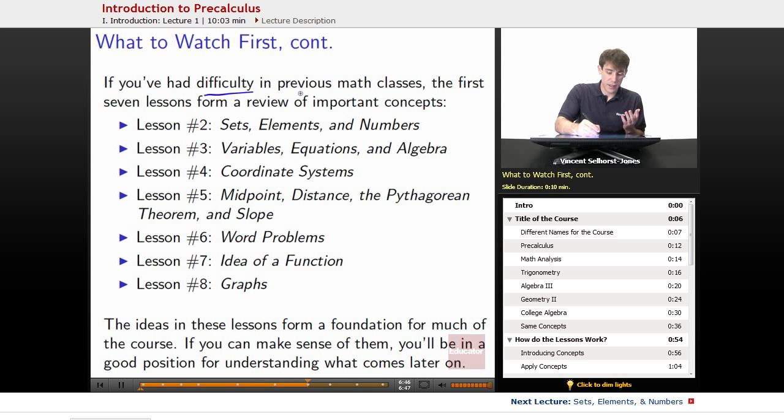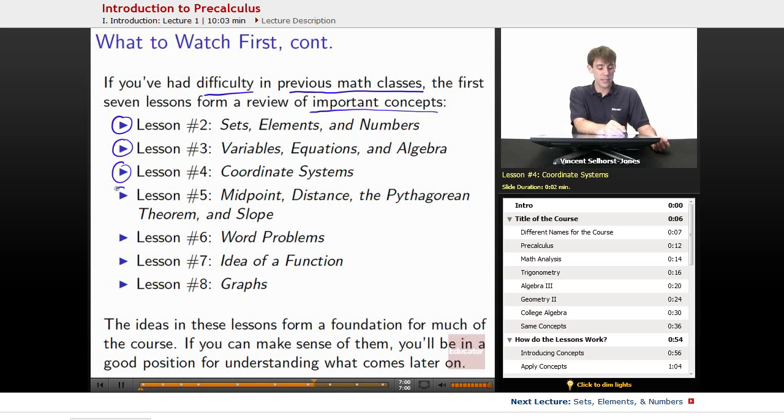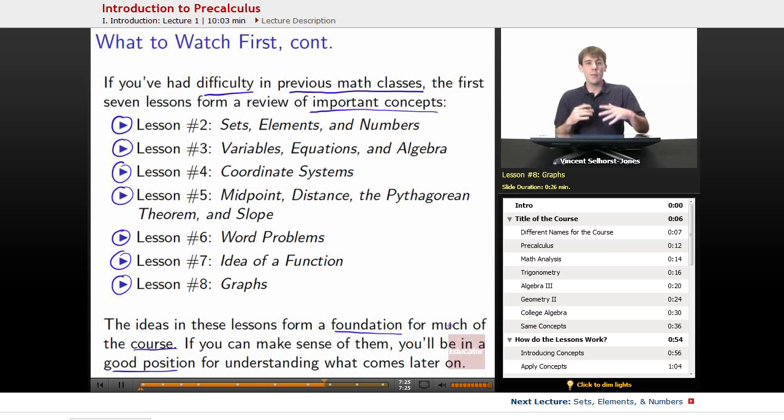If you've had difficulty in previous math classes, if math class has been a little difficult for you, you might want to watch the first seven lessons, because they form a review of important concepts. Lesson number two, Sets, Elements, and Numbers. Number three, Variables, Equations, and Algebra. Four, Coordinate Systems. Five, Midpoint, Distance, the Pythagorean Theorem, and Slope. Six, Word Problems. Oh, I guess that should have been the sixth lesson previously, sorry about that. Lesson number seven, Idea of a Function, and Lesson number eight, Graphs. The ideas in these lessons form a foundation for much of the course. If you can make sense of them, you'll be in a good position for understanding what comes later on. So you really want to make sure that these ideas make sense to you, because if they don't quite make sense to you right now, later stuff's going to be really hard. But we'll do a lot of review in these beginning important, these beginning review pieces, so that they'll give you the chance to really understand what happens later on.